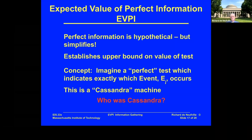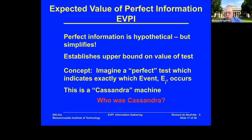The concept is that there is a perfect test which tells you exactly which event is going to occur. I'm calling this a Cassandra machine — from Greek mythology. Cassandra had the gift of being able to see what the future would be, but with the curse that nobody would ever believe her. It was all about the battle for Troy — she could predict that somebody would die, but nobody would believe her. So that's the thing: she could predict absolutely.